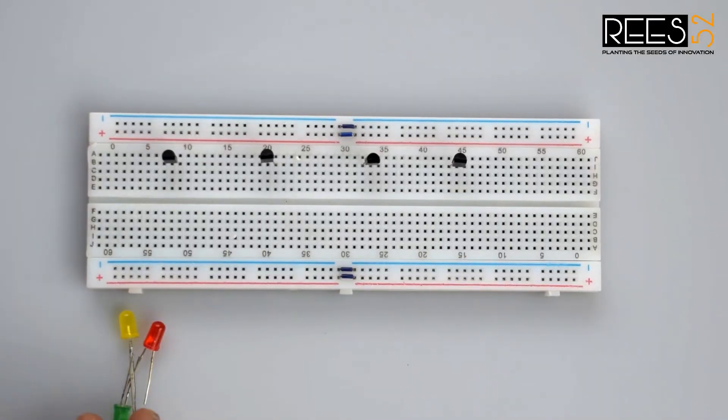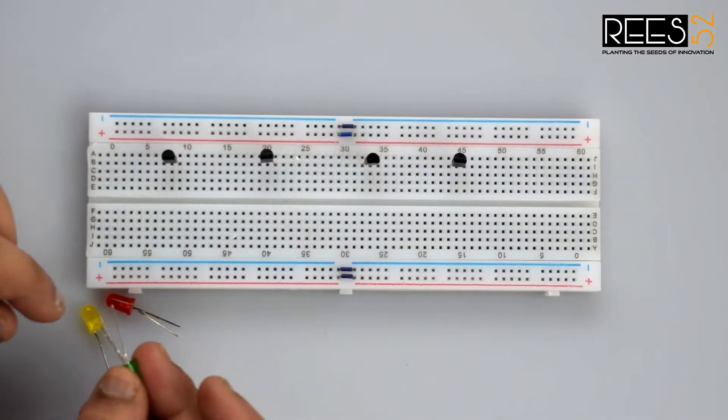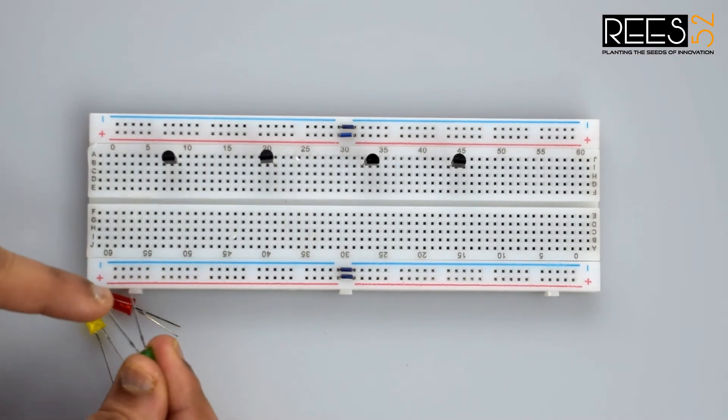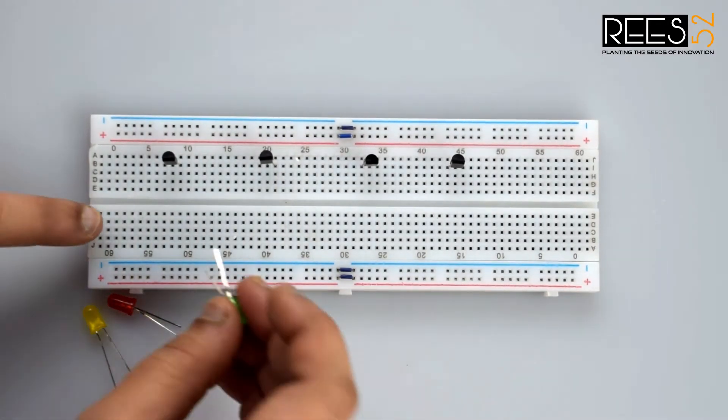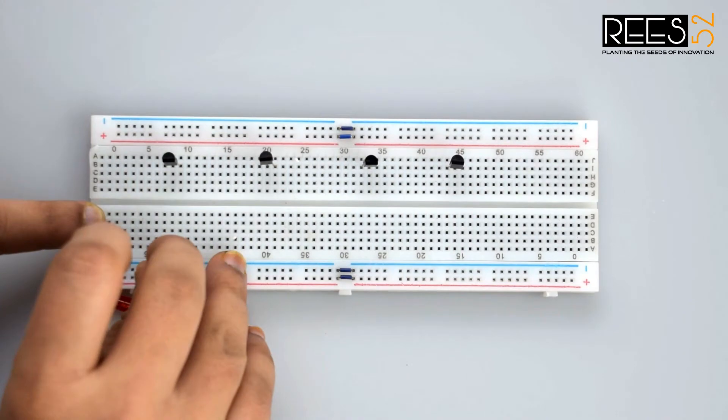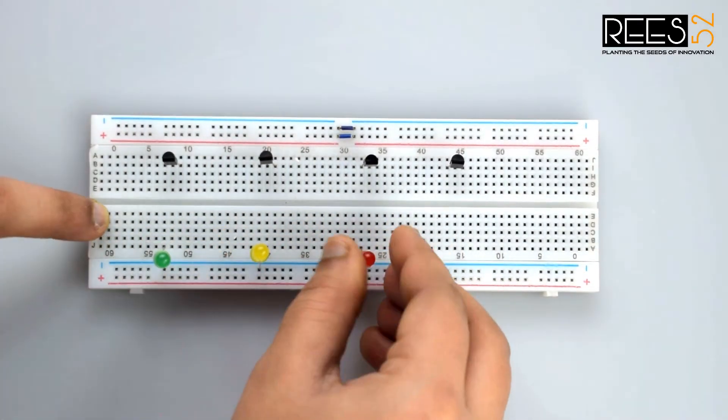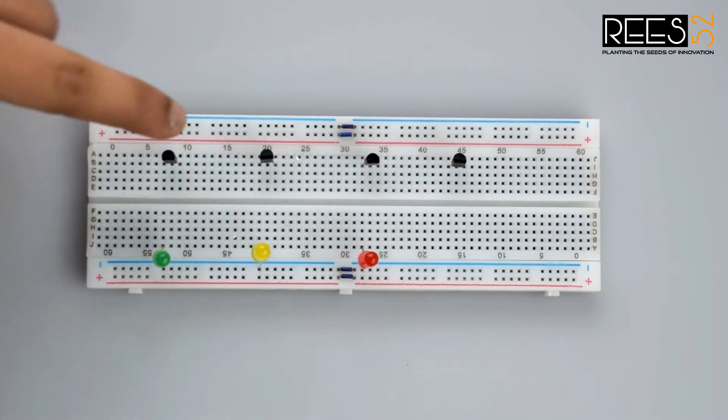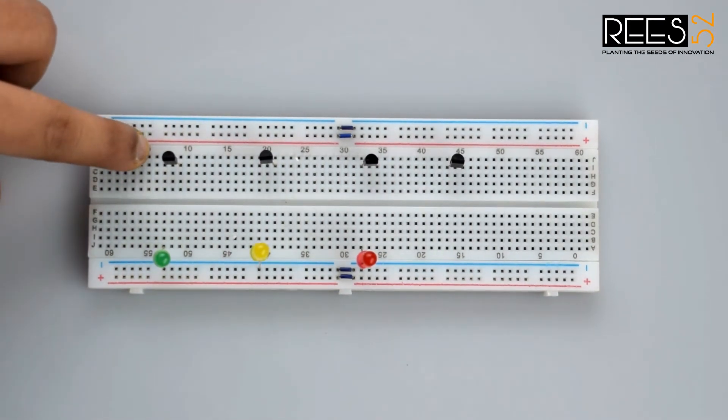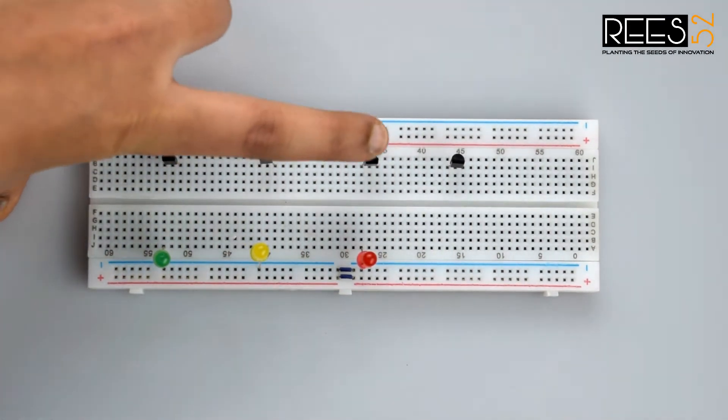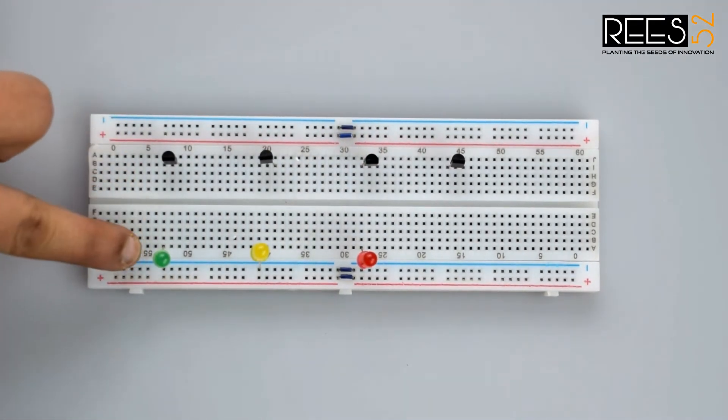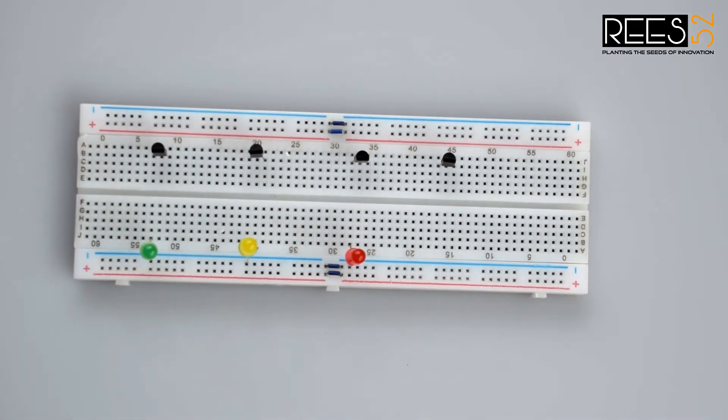Now attach all the LEDs to the breadboard with their all negative terminal to the negative rail on the breadboard. Now connect all the collector pins of the transistor Q1, Q2, Q3 to the positive leg of this LED via 330 ohm resistors.